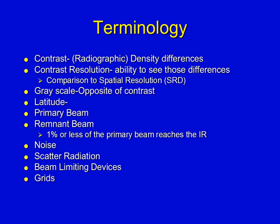Spatial resolution is controlled with lines, angulations, focal spot size, and distances. Grayscale is the opposite of contrast; latitude is the same as grayscale. The primary beam is before interaction with the patient; the remnant beam is what comes out. The patient absorbs a tremendous amount of the beam — only 1% or less of the primary beam reaches the image receptor.